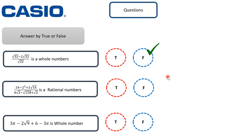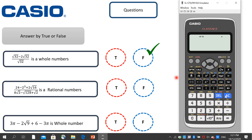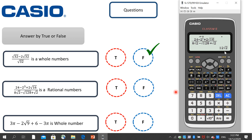For the second example, we have: (24 minus 2 to the power 3 plus 2 radical 16) over (8 radical 2) minus square root of 32 minus square root of 2. Input the expression into the calculator: click the fraction bar, enter 24 minus 2 power 3, move the cursor to the right, plus 2 square root 16, move cursor down, enter 8 radical 2, move cursor to the right, minus square root of 128, move cursor right again, plus radical 2, then click equal. The answer is 12 radical 2, which is not a rational number — it is an irrational number, so the answer is also false.